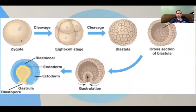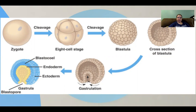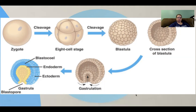So here we have our zygote going through mitotic divisions — what we call cleavage — forming many, many cells. Then in the blastula, the cells orient themselves to the outside, leaving a hollow cavity called the blastocele. The next part is gastrulation, which is when the ball of cells starts folding inward on itself, and that will start forming different layers.